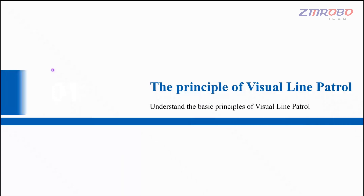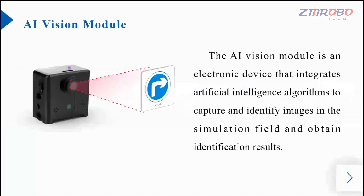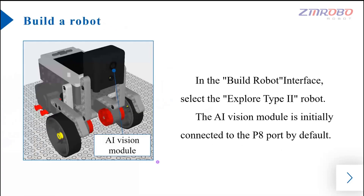Next, let's learn the basic principles of visual line patrol. If you want the robot to implement visual line patrol, you need to use the AI vision module. The AI vision module is an electronic device integrated with artificial intelligence algorithms, which can collect and recognize images in the simulation site and return the recognition results. On the body of the robot, an AI vision module is installed to recognize roads and traffic signs.